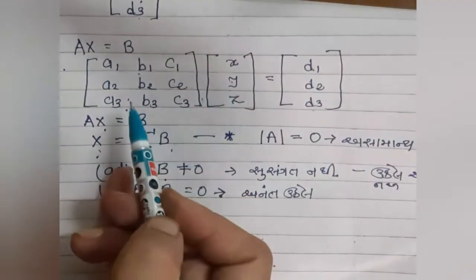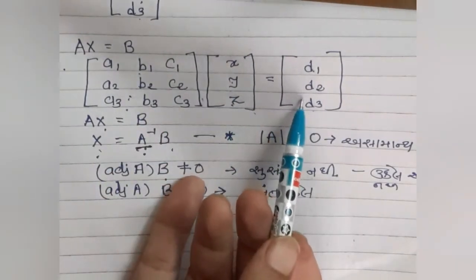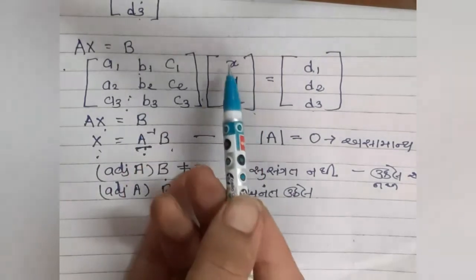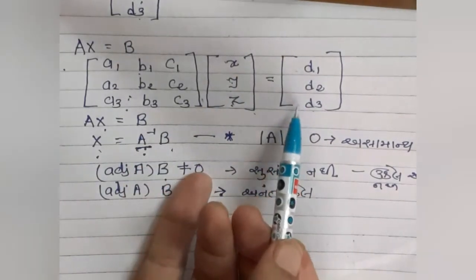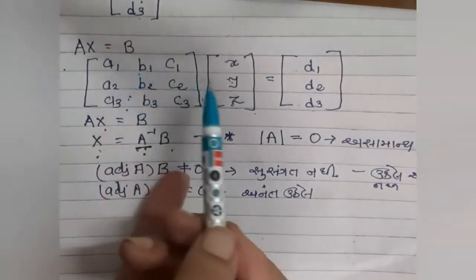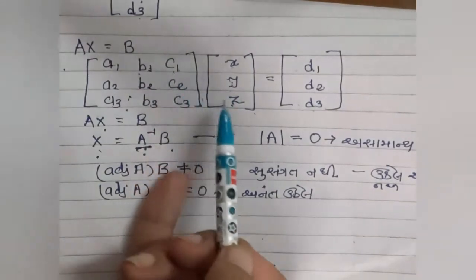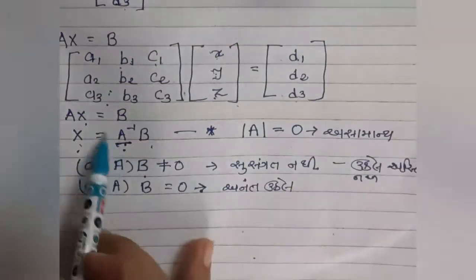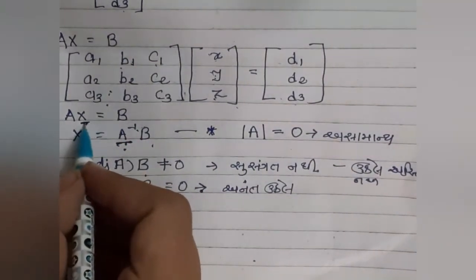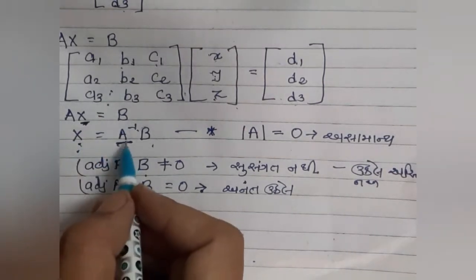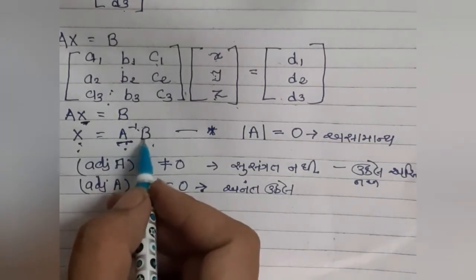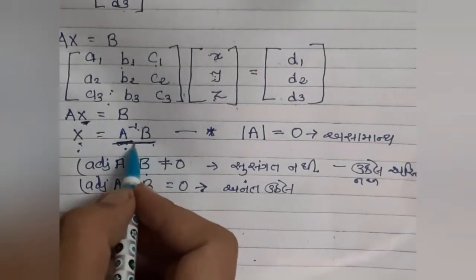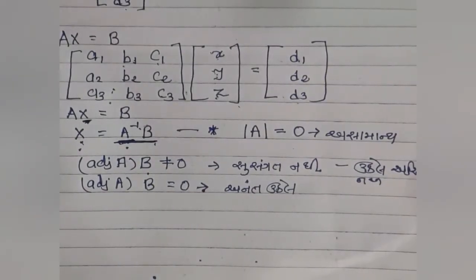AX = B, જ્યાં A = [a1 b1 c1 / a2 b2 c2 / a3 b3 c3], X = [x y z]ᵀ, B = [d1 d2 d3]ᵀ. તમે ગુણાકાર કરો તો a1x + b1y + c1z = d1 - પહેલું સમીકરણ મળે. AX = B માંથી X ની કિંમત સોધવા X = A⁻¹B.